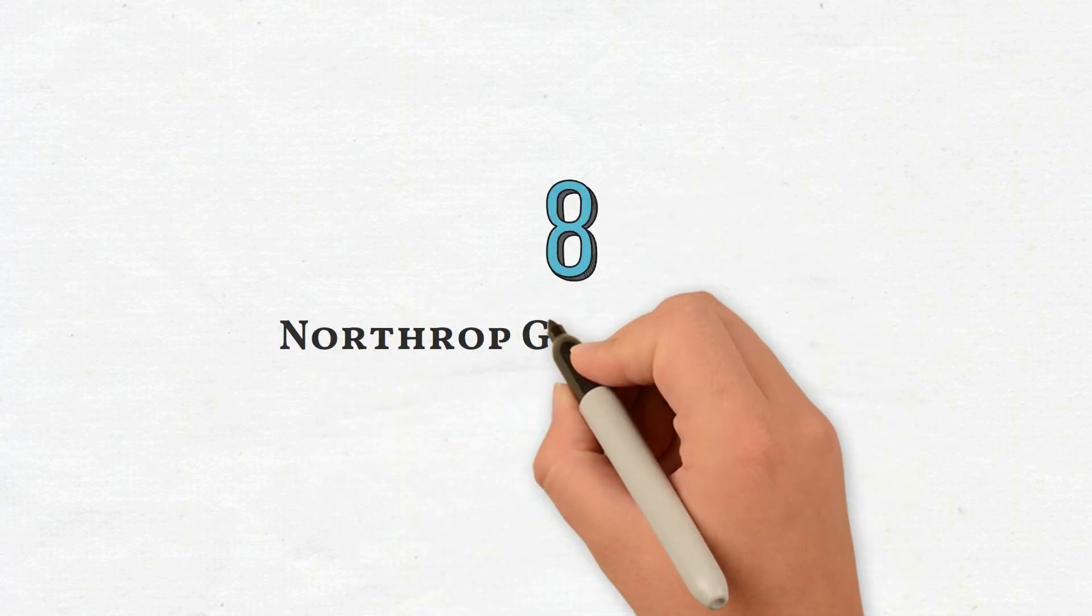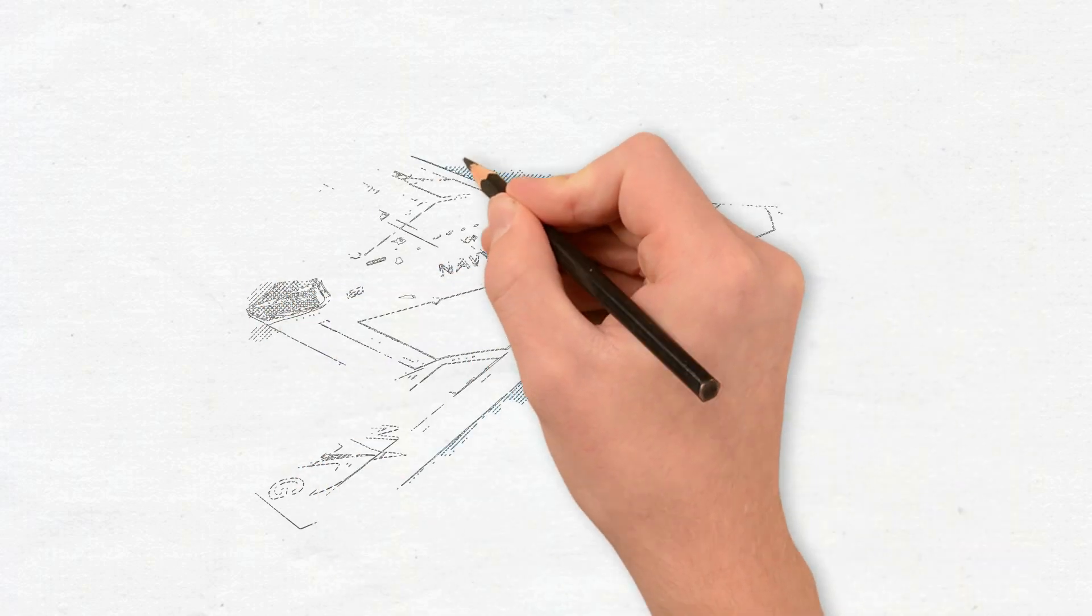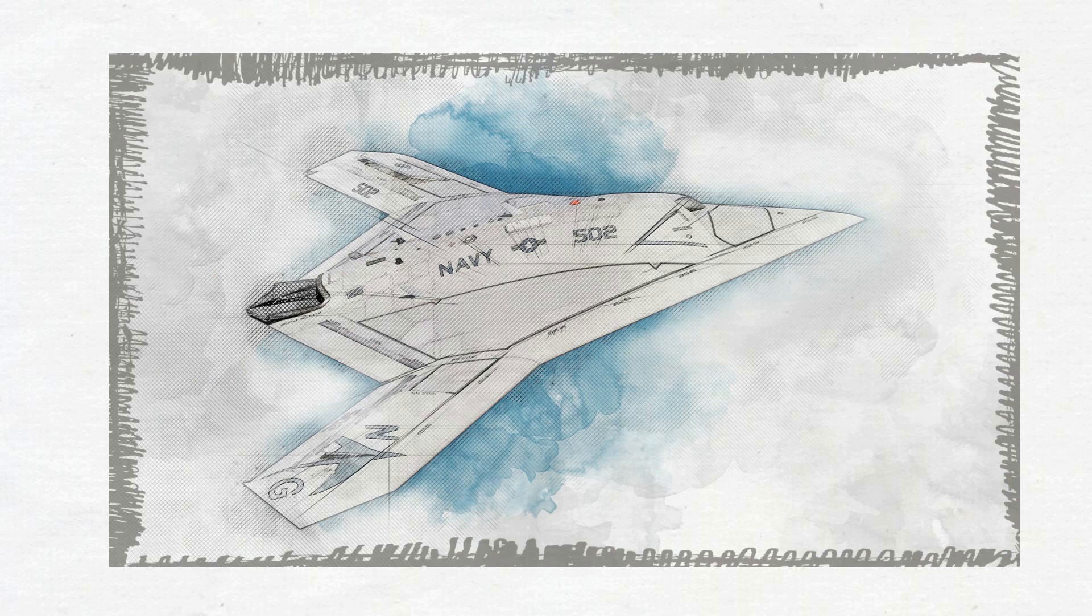The Northrop Grumman X-47B is a demonstration unmanned combat aerial vehicle designed for missions from aircraft carriers. It is developed for operations based aboard aircraft carriers.